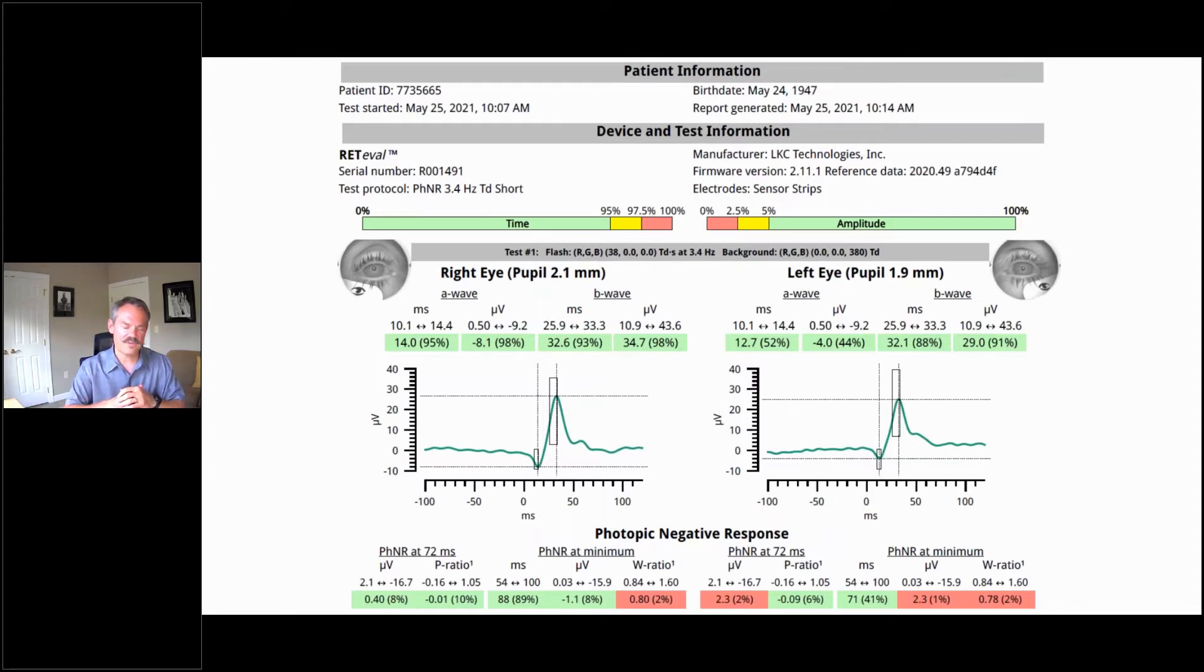But this concerns us. We need to act soon. That's where we're at for her. But the ERG, when I saw those PHNR at minimum amplitudes being so low, 1% in that left eye, that raised our level of concern even higher. And it was already pretty high.